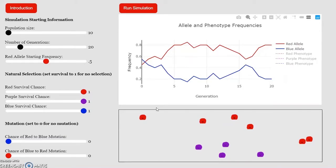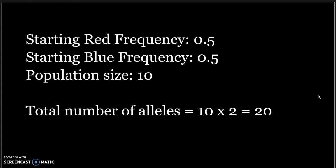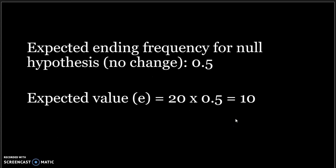We'll be doing the chi-squared calculation using the number of alleles, not the frequencies. The population size is 10, which means there are a total of 20 alleles in the population because each individual has two copies of the gene. To get the number of alleles, multiply the frequency by the total number of alleles.